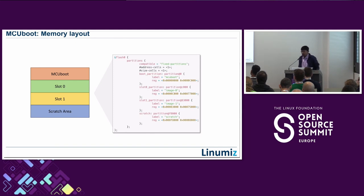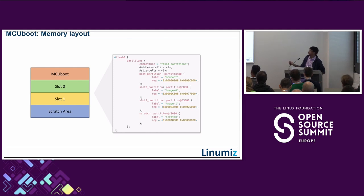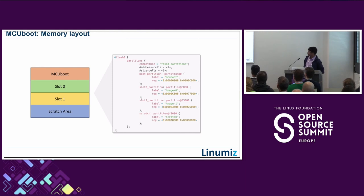In a nutshell, the memory layout when you enable MCU boot in Zephyr starts with the MCU boot at offset zero, followed by image slots based on your configuration. If your system has multiple SoCs like M33 and M4 combined, you'll have multiple image slots. MCU boot supports multi-image slots. The layout is derived from device tree configuration or a flash map, or from YAML configuration as used by vendors like Nordic.